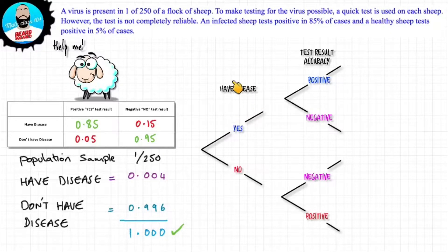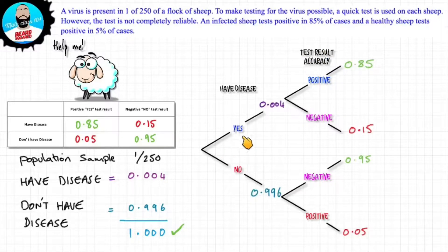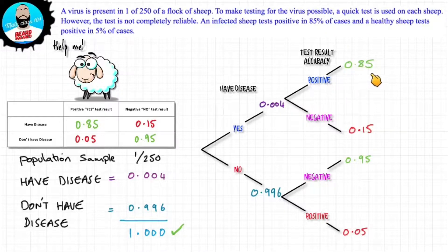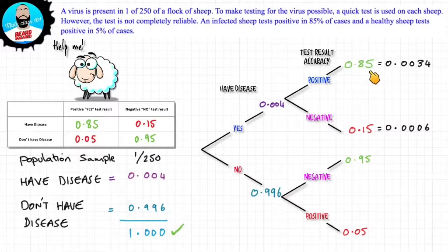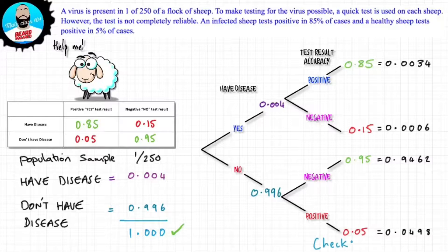Now we can use these to complete our probability tree diagram. Branch one covers whether they have the disease or not, and branch two covers the test accuracy. Those who do have the disease: 0.004; those who do not: 0.996. An infected sheep tests positive in 85% of cases, so 0.85, which leaves 0.15. A healthy sheep tests positive in 5% of cases, so 0.05, leaving a remainder of 0.95. To find the probability we multiply the outcomes of each branch: 0.004 times 0.85 gives us 0.0034, and we do the same to complete the rest of the branches. You want to check that all of the probabilities add up to 1 — if they don't, go back and check your numbers.